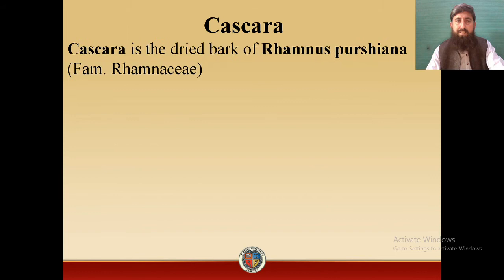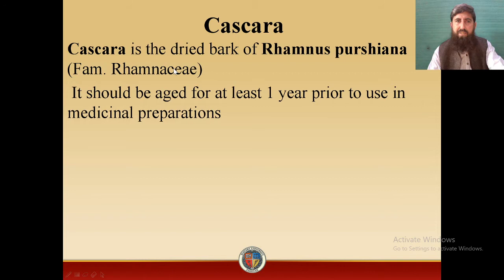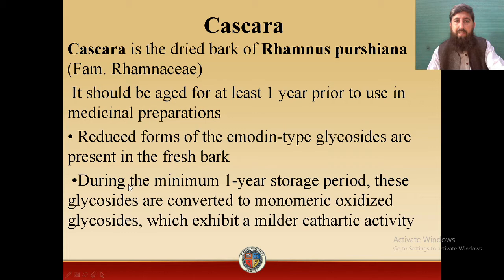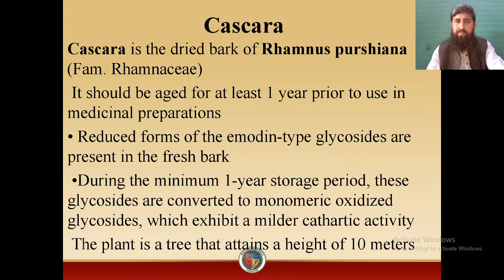Now we will study each drug one by one. First, Cascara. Cascara is the dried bark of Rhamnus purshiana, family Rhamnaceae. It should be aged for at least one year prior to use in medicinal preparation. Reduced forms of the emodin glycosides are present in the fresh bark. During the minimum one-year storage period, these glycosides are converted to monomeric oxidized glycosides, which exhibit a milder cathartic activity.